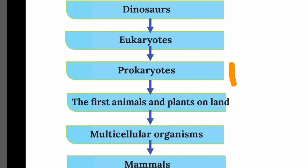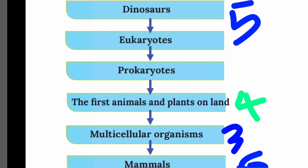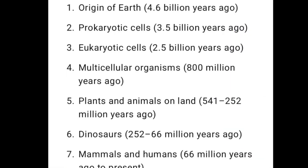Eukaryotes are multicellular organisms. The first animals and plants — if you look at the right billions of years ago, plants and animals appeared.